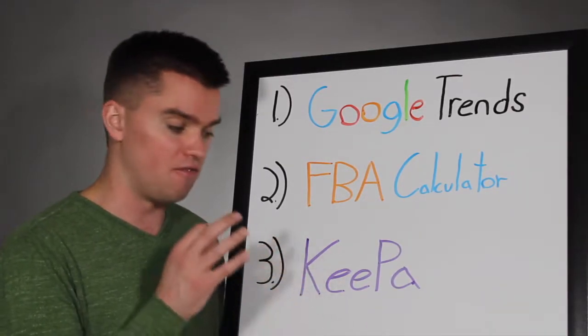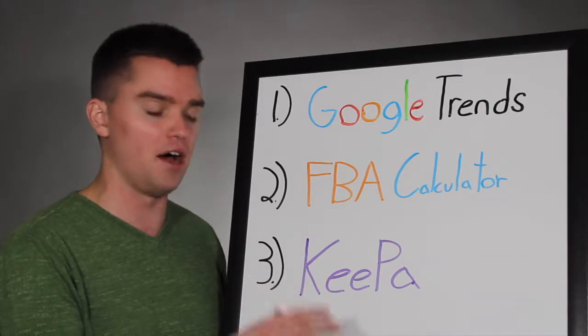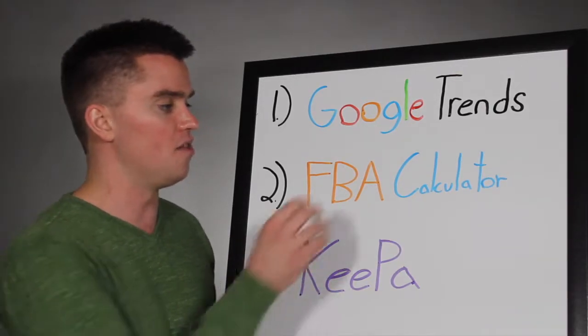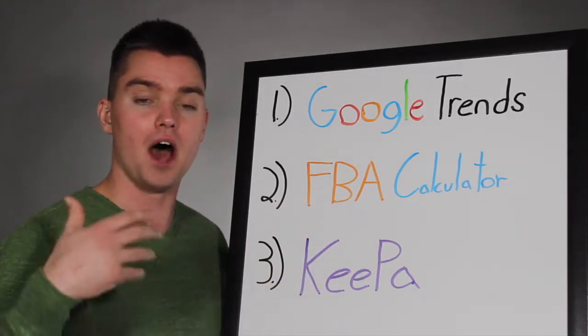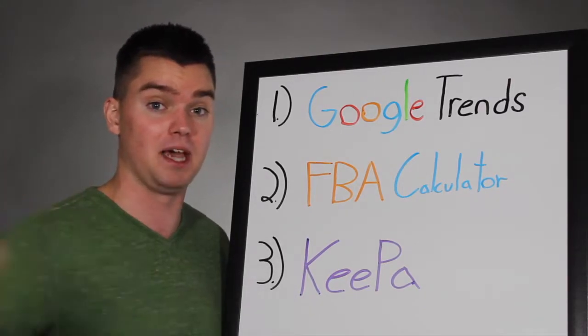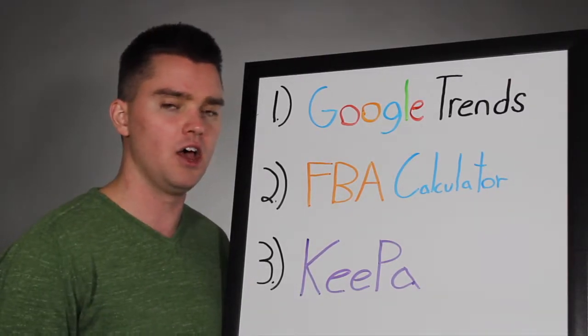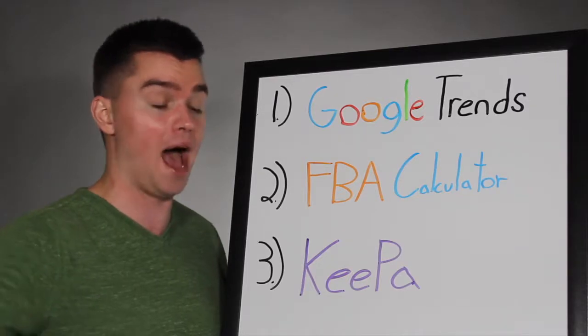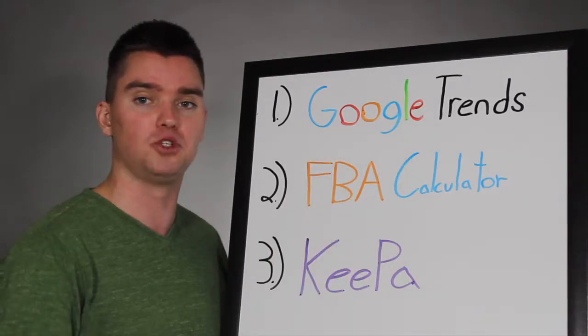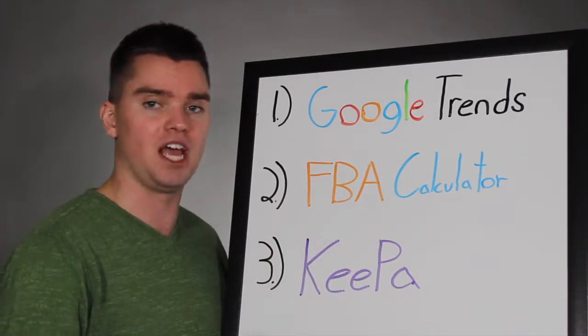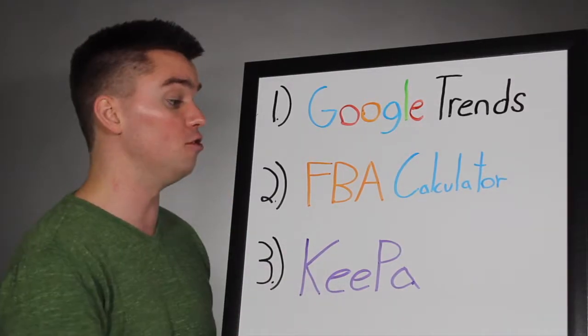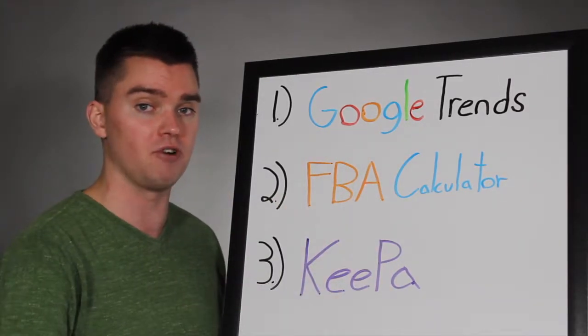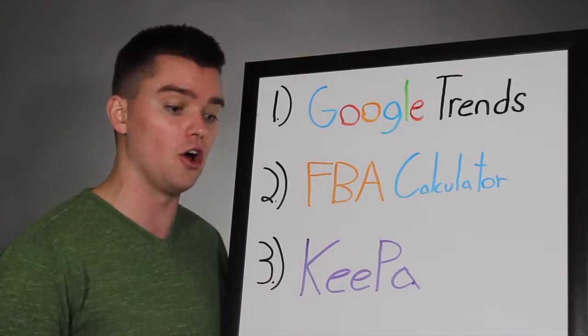Very important information. It can help you understand your ideal price point. The FBA calculator will help you understand how much profit you can expect to make per unit of a potential product, or if it's even a profitable product to go after. And then Google Trends helps you avoid or understand any kind of seasonal or trending product. So I use all three of these tools. They're totally free. I'll have links in the description below.